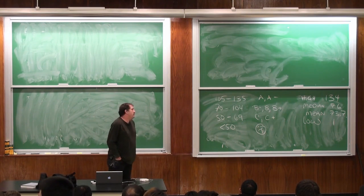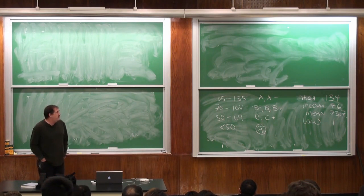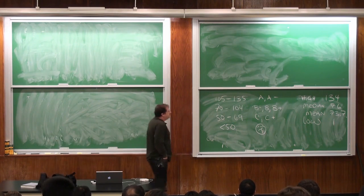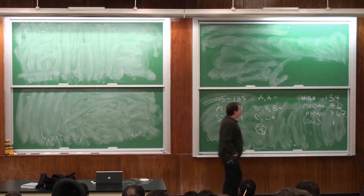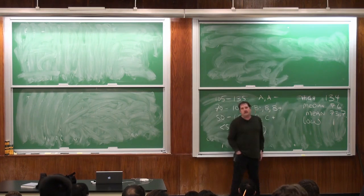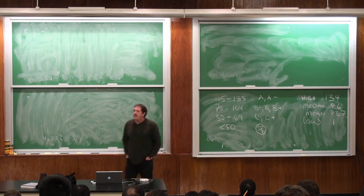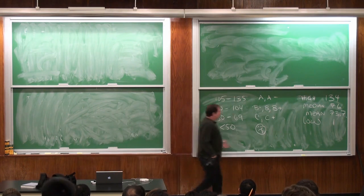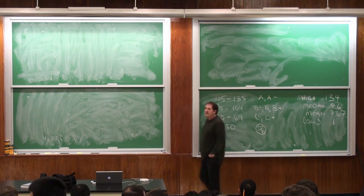The average is just under 74. The median, which is really a little more useful, is 76. The median means as many people got above 76 as got below 76. The mean usually tends to be a little lower because of people who bring things down.